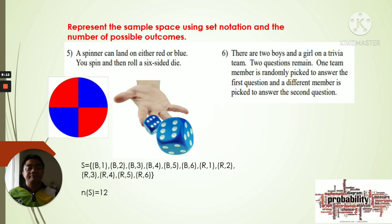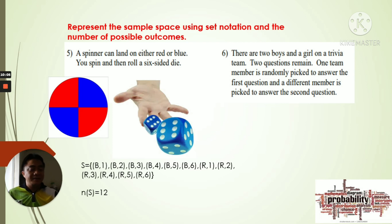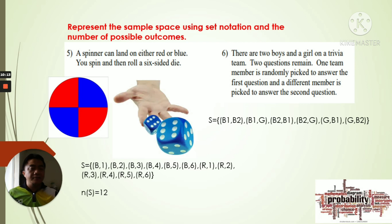There are two boys and a girl on a trivia team; two questions remain. One team member is randomly picked to answer the first question and a different member answers the second. If one boy answers the first question, then the second boy or the girl answers the second question — it must be a different member each time.